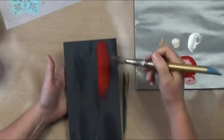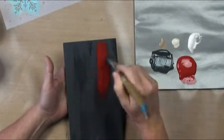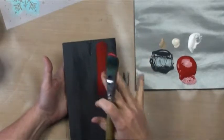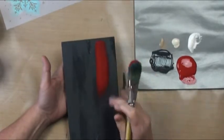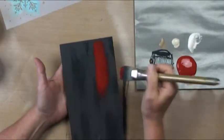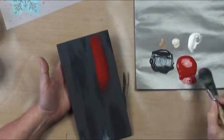The other thing you need to know about crackle is it cracks in the direction of your brush stroke. So if I slip slap, it'll kind of hazy crackle. If I go in one direction, it'll crack in that direction. If I go across, it'll do that direction.